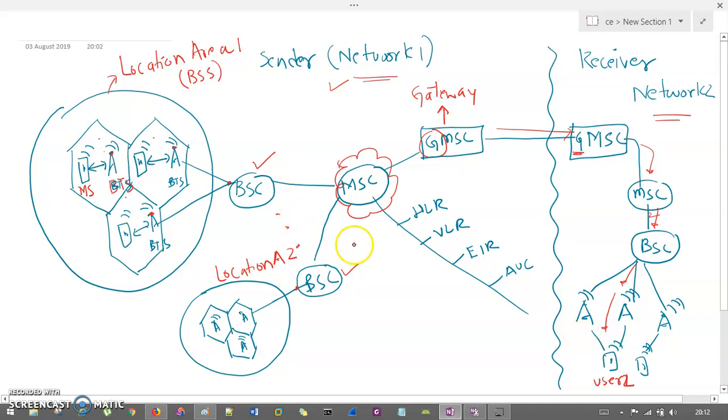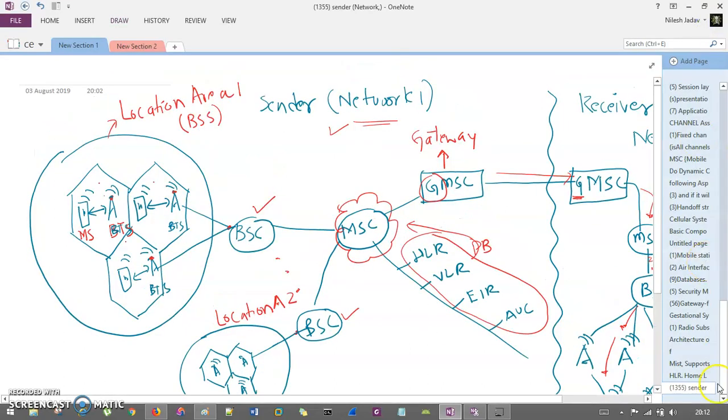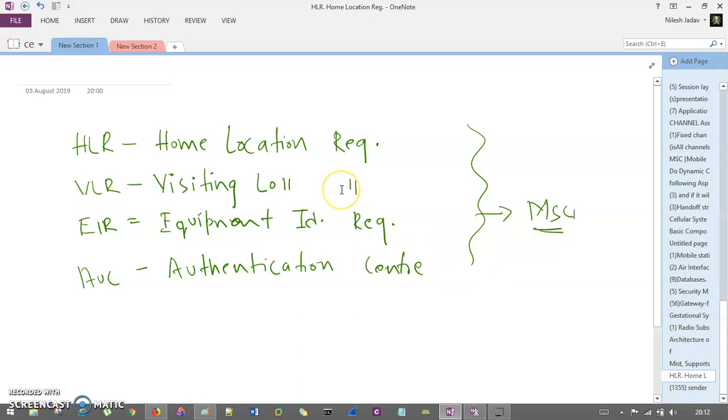So, now, we have another entities here, we call it as databases. So, this thing is the database of MSC. So, MSC handles 4 types of databases. And these databases, I abbreviated those databases here. HLR is Home Location Register, VLR is Visiting Location Register, and EIR is Equipment Identity Register, and AUC is Authentication Center. These are the 4 databases handled by MSC.